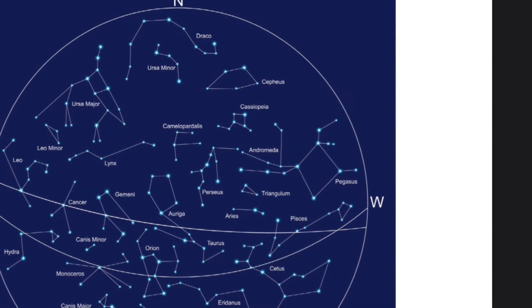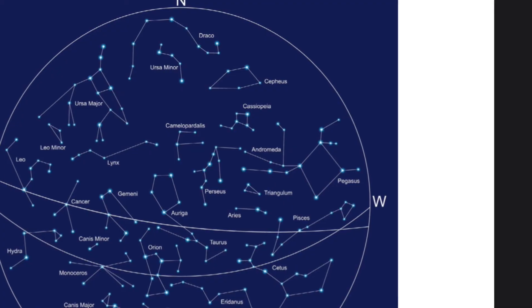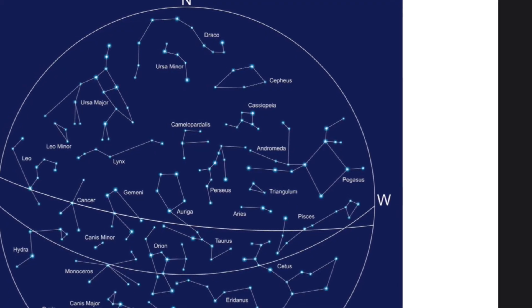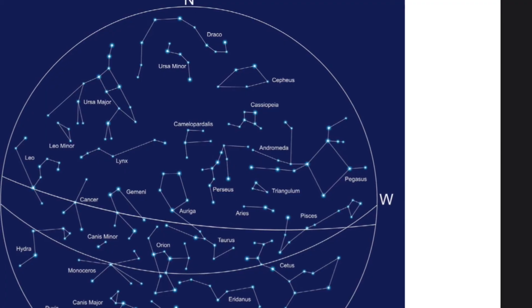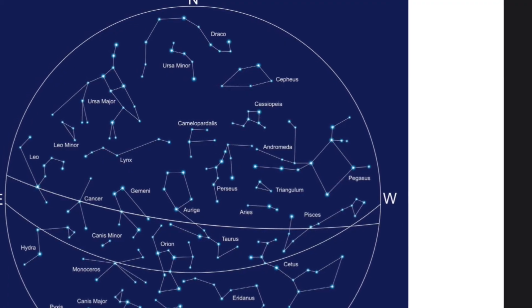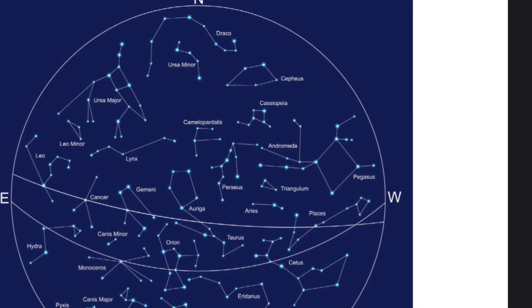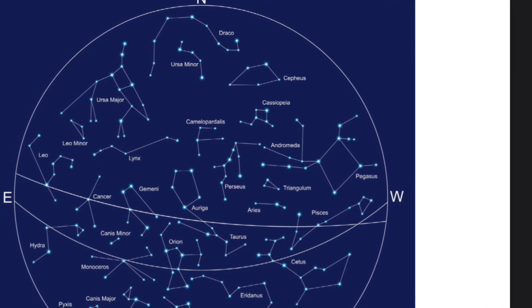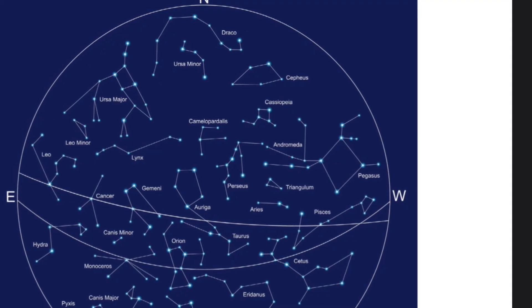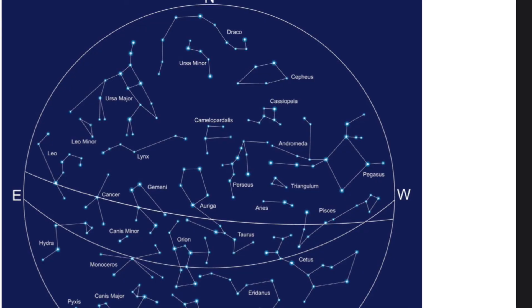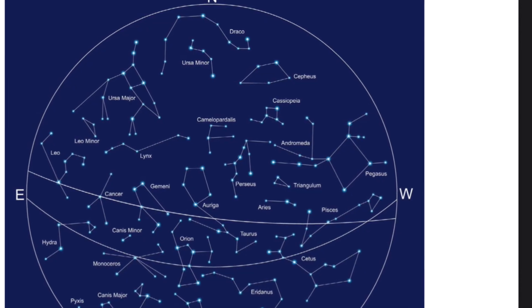There are 88 major constellations, and most people around the world use the same basic list. When these constellations were first named, most ancient people could only guess what stars actually were. Ancient people told stories and myths based on what they could see with their own eyes when they looked up at the sky. But, we have learned that there is much more to space than meets the eye.